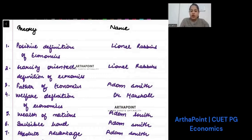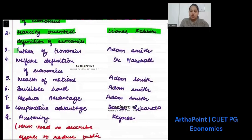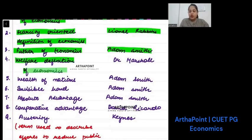Positive definition of economics was given by Lionel Robbins. Scarcity-oriented definition of economics was given by, again, Lionel Robbins. Father of economics was Adam Smith. Welfare definition of economics was given by Marshall.